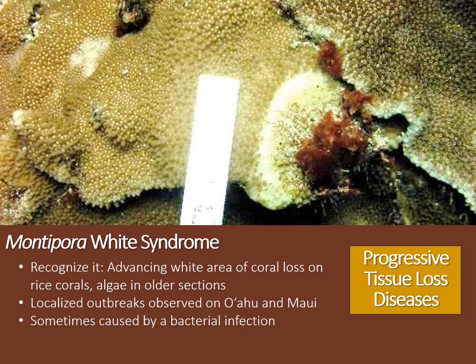Another type of progressive tissue loss disease is Montipora White Syndrome, which only affects rice coral. This disease can be observed throughout the Hawaiian Islands, and recent outbreaks have been observed on Oahu and Maui. To recognize this disease, look for well-defined areas of coral tissue loss revealing intact white coral skeleton, with older sections of exposed skeleton often covered in turf algae. Several bacterial pathogens have been identified that can cause this progressive tissue loss disease. Unfortunately, once established, Montipora White Syndrome can move across a coral colony rapidly, resulting in partial to complete mortality. Because of the rapid rate of spread, it's important that you quickly report any suspected case to the Eyes of the Reef Network.